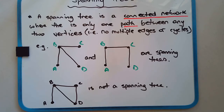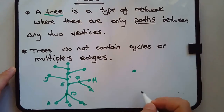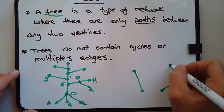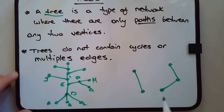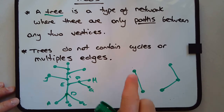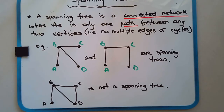So, if a tree is disconnected or unconnected, such as having two separate components with no connection between them — this is a tree, but it's not spanning. For a tree to be spanning, there must be a way to get from any vertex to every other vertex, otherwise it's a disconnected tree, not a spanning tree.